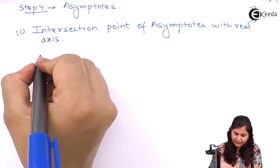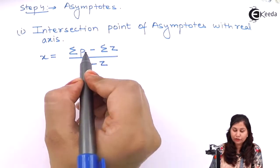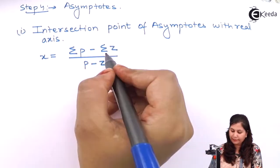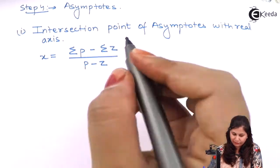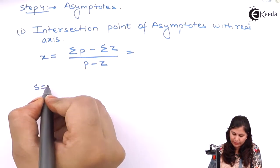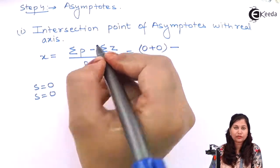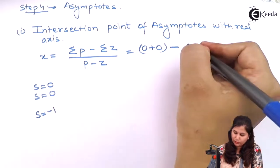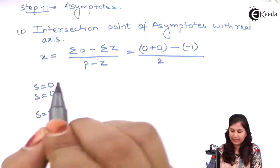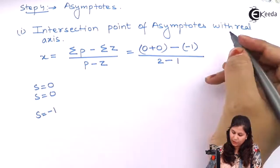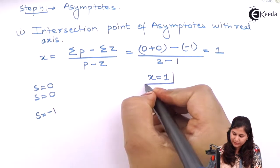The formula for the intersection point is: x = (Σp − Σz) / (P − Z), where Σp is the sum of all poles, Σz is the sum of all zeros, P is the number of poles, and Z is the number of zeros. We have poles at s = 0 and s = 0 (sum = 0) and one zero at s = −1. So x = (0 − (−1)) / (2 − 1) = 1/1 = 1. The asymptote intersects the real axis at x = 1.